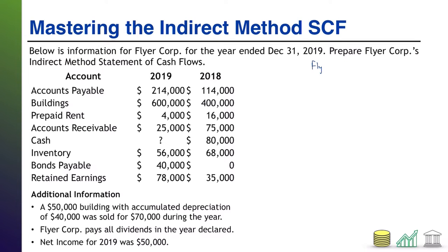First up, as with any financial statement, you're going to need a header: Flyer Core, company name, statement of cash flows, for the year ended 12/31/19. All indirect method statements of cash flows start the same way - you've got your cash from operating activities section, and the first line will be net income.